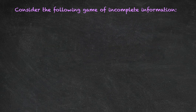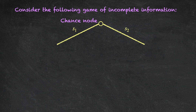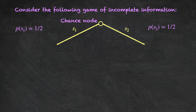Consider the following game of incomplete information. We start with a chance node. Nature is going to choose one of two things: whether it is state one or state two. Nature is a player in this game in a sense, but it follows a prescribed strategy where it chooses state one with probability one half and state two with probability one half as well. Once nature has chosen the state of the world, we arrive at terminal nodes where something is going to happen, which we'll describe in a moment.